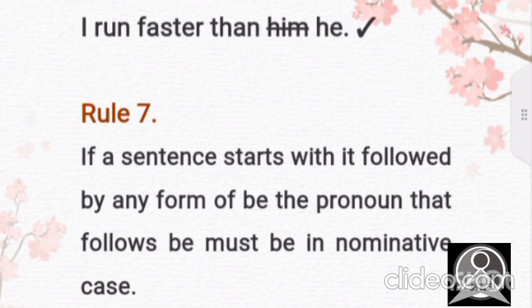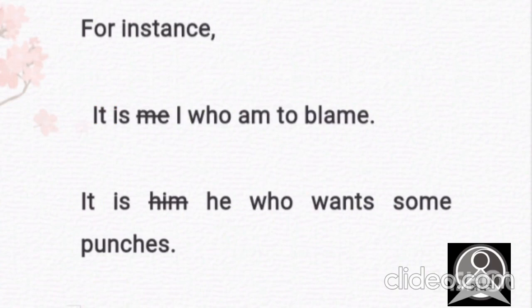Let's know the seventh rule. If a sentence starts with it followed by any form of be, the pronoun that follows be must be a nominative case. For instance, it is me, which is wrong. We don't have to say me. We have to say I because me is objective case and I is the nominative one. And here we are using it because of which we are putting nominative one. It is I who am to blame. It is him. No, not him. It is he who wants some punches. These are the most common mistakes people usually make. You don't have to do the same.